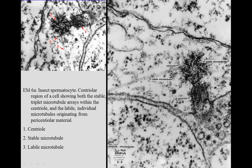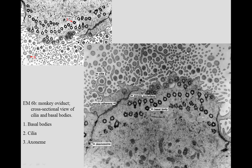Here we see some stable microtubules as part of a centriole. You remember the centriole is the nine triplets — one, two, three microtubules. Radiating from there would be labile microtubules, or cytoplasmic microtubules as you might say.